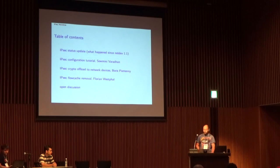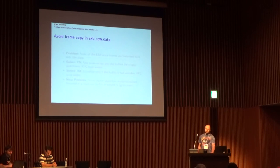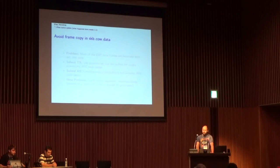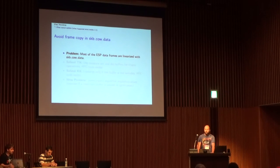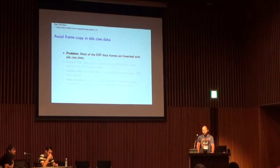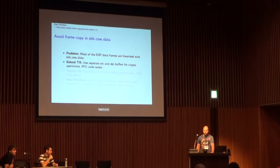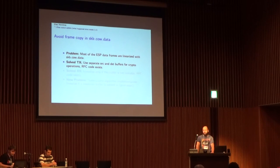Let's start with a status update. Last time at NetDev, we had a discussion on how to avoid copy-on-writes in the IPsec data path. The problem is that most ESP data frames are linearized because we need writeable buffers for the crypto operations. We solved that — on the TX part we now use separate source and destination buffers for the crypto, so an extra copy is not needed anymore there.